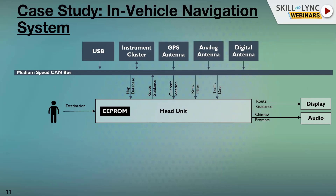Different regions use different ways to send traffic data. For example, Europe uses RDS — Radio Data Services — which is an FM multiplexed signal. Regular audio and data are multiplexed together. Your vehicle's FM antenna receives it, a decoder splits out the data and sends it to the head unit, which overlays the traffic lines on the map.